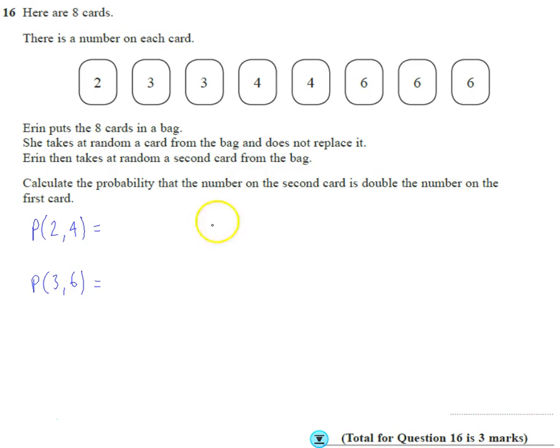If I pulled out a four first, then I'd have to have eight on the second, there aren't any eights. The same way if I pulled out six first, there'd have to be a twelve, but that is impossible.